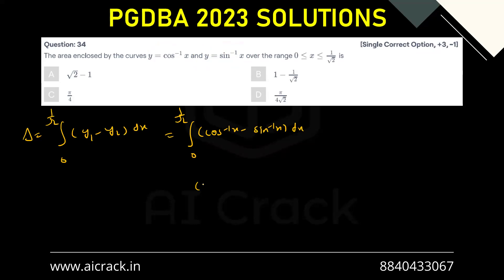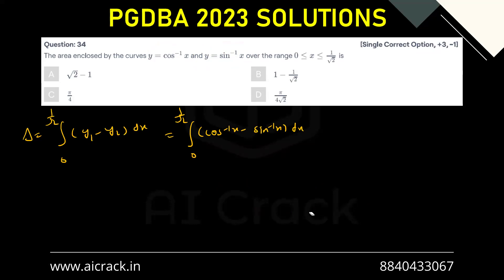Now we also know that cos⁻¹x + sin⁻¹x = π/2, so sin⁻¹x = π/2 minus cos⁻¹x. Using this substitution, we get the integral from 0 to 1/√2 of (2·cos⁻¹x minus π/2) dx.